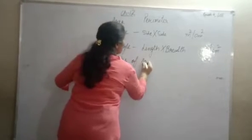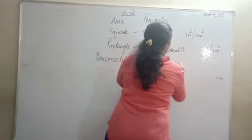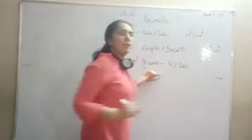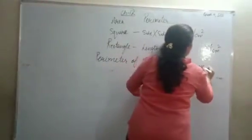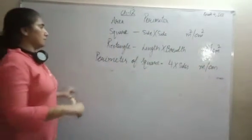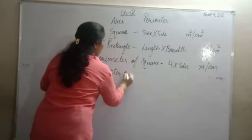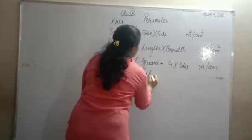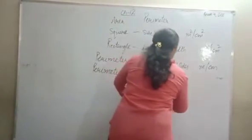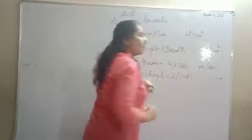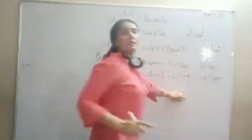Then we have the perimeter of a square. The perimeter of a square is the sum of all sides; with the formula we use 4 multiplied by side. Its unit is meter or centimeter. Then we have the perimeter of a rectangle, which is 2 times the sum of length and breadth. Its unit is meter or centimeter.